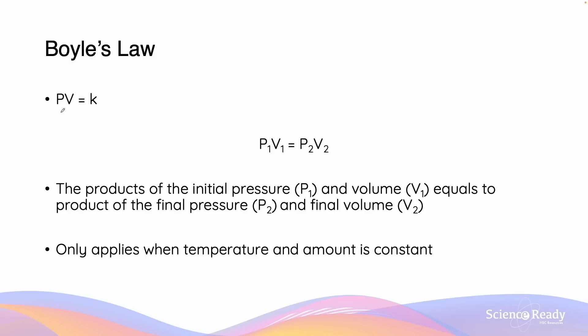If the mathematical relationship PV equals K is true according to Boyle's law, we can also derive the relationship P1V1 equals P2V2. This relationship can be translated to that a change in pressure or volume of a system will cause the initial pressure P1 and initial volume V1 to equal to the product of the final pressure P2 and the final volume V2.